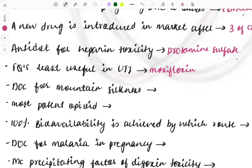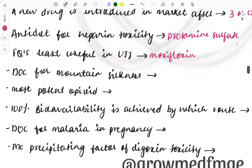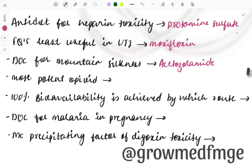Drug of choice for mountain sickness — again an important and repeat topic: acetazolamide. The most potent opioid is fentanyl. This was a simple one-liner asked in past years, but now they can change the question into a clinical case, so you need to be ready to connect the options and reach the diagnosis.